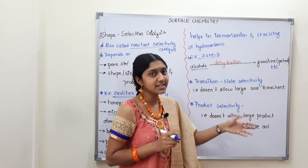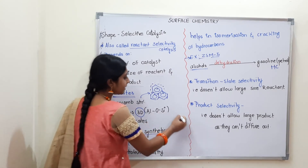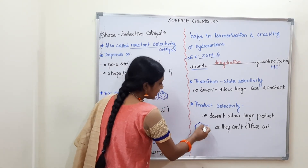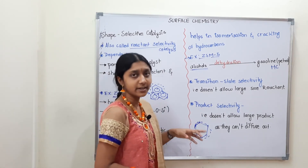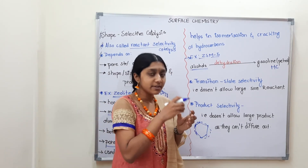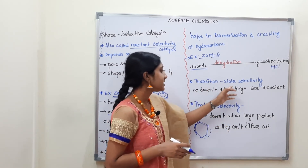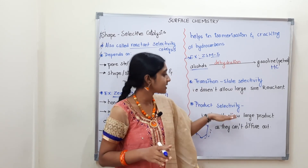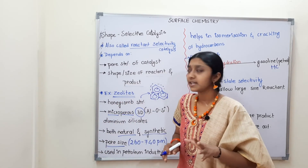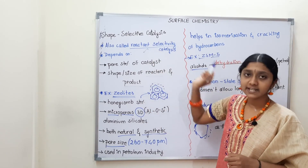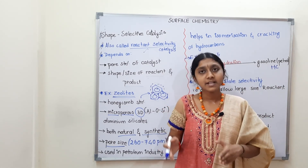Product selectivity doesn't allow large products. Only products that fit the pore size are allowed to diffuse out. If a product is too large, it can't diffuse out of the catalyst. So transition state selectivity allows only pore-sized reactants, and product selectivity allows only pore-sized products. Reactant selectivity depends on zeolites and their important features. This is shape selective catalysis.